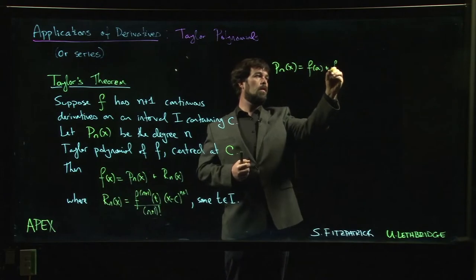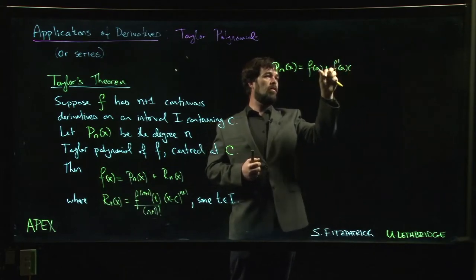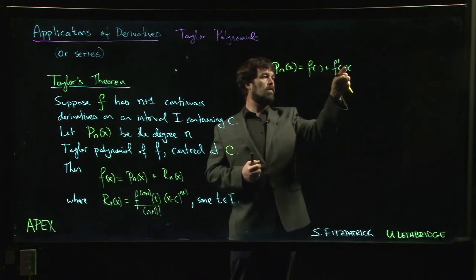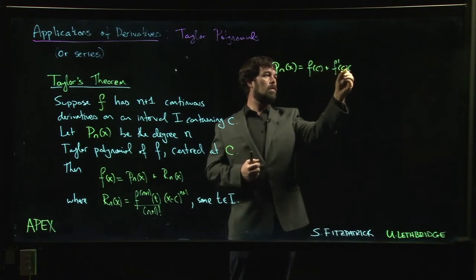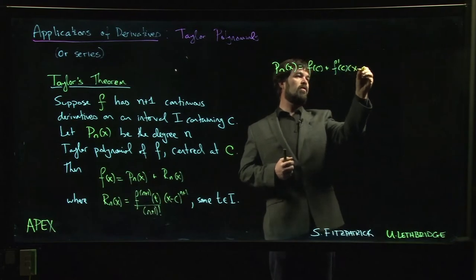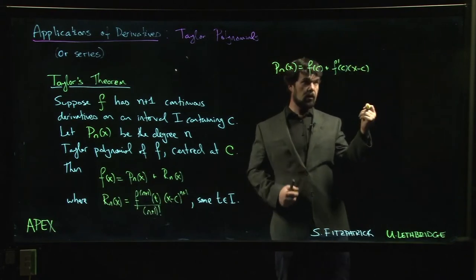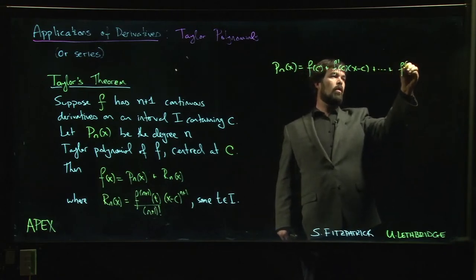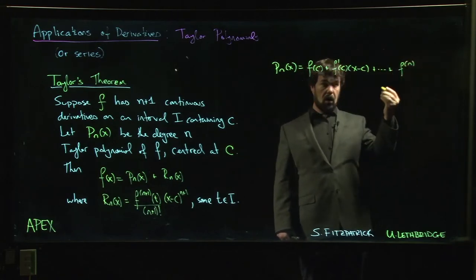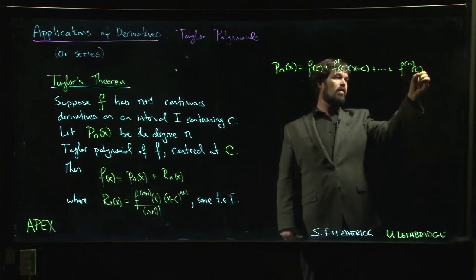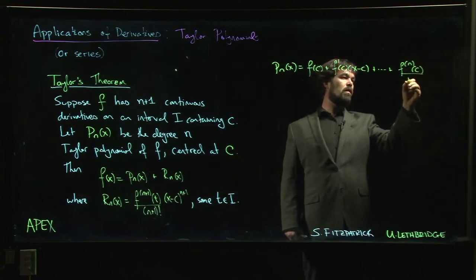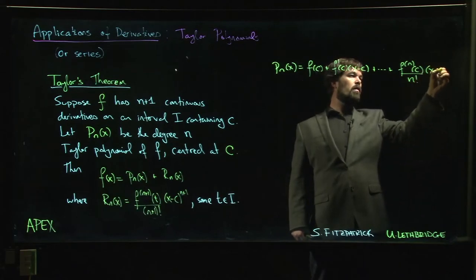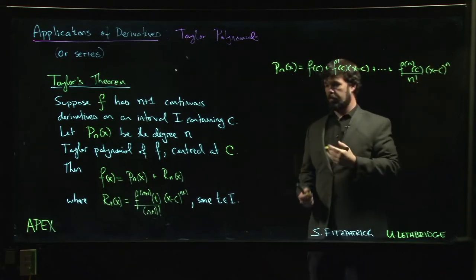Remember that our Taylor polynomial looks like f(C) plus f'(C) times (x-C) - there's the linear approximation - plus these higher order terms which come by taking higher and higher order derivatives evaluated at point C, dividing by factorial, and multiplying by the corresponding power of (x-C).